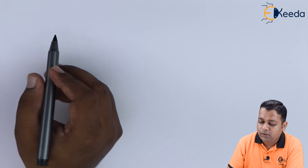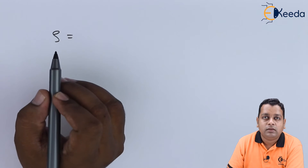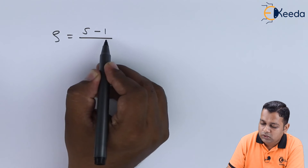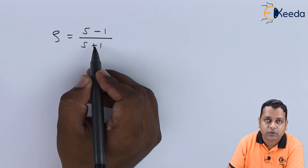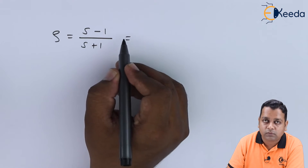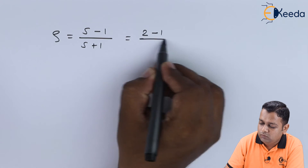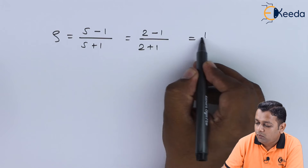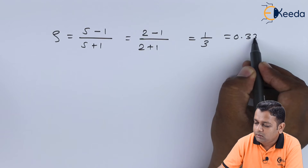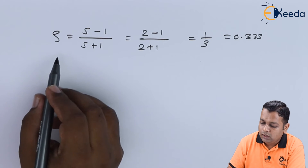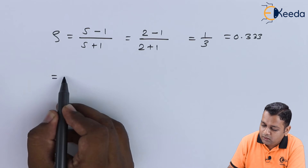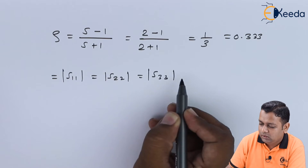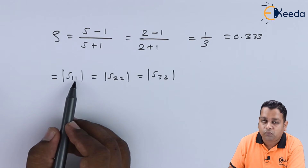If we denote the reflection coefficient by ρ and the SWR value by S, the relation between the two is: ρ = (S − 1)/(S + 1). With the VSWR value S = 2, this becomes (2−1)/(2+1) = 1/3 = 0.333 recurring. The reflection coefficient is equivalent to the scattering parameters s11, s22, and s33.